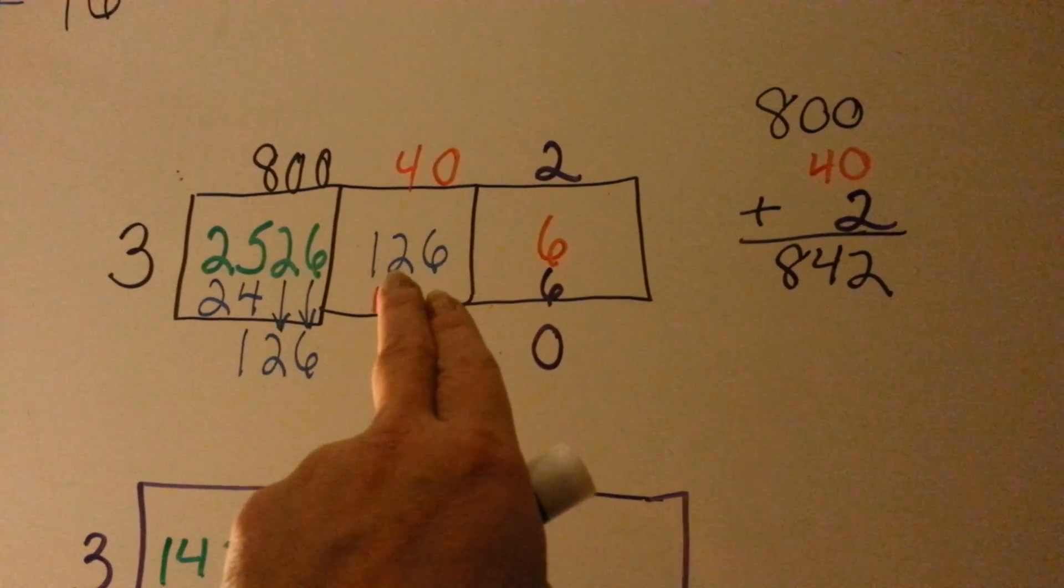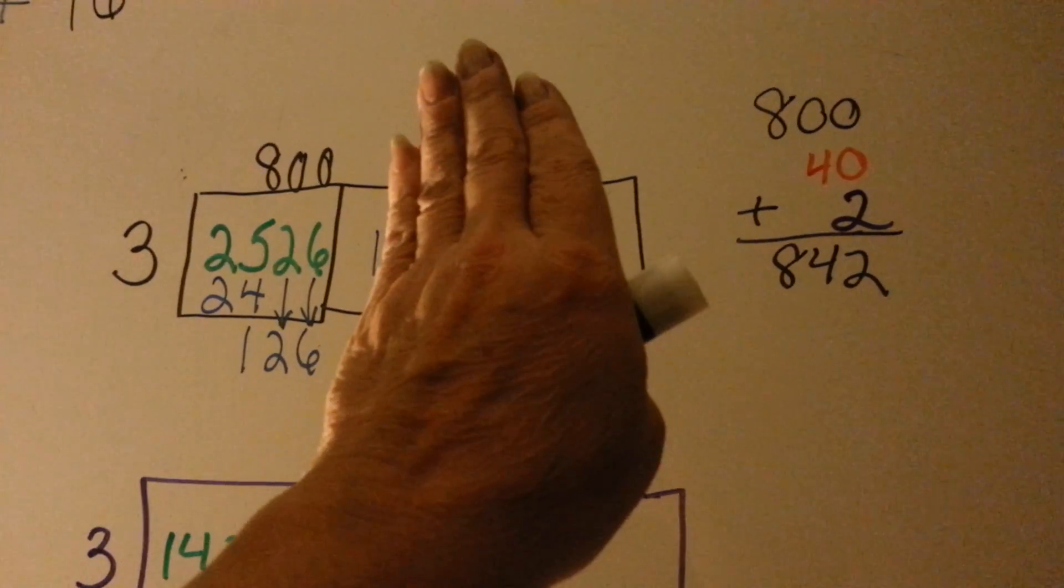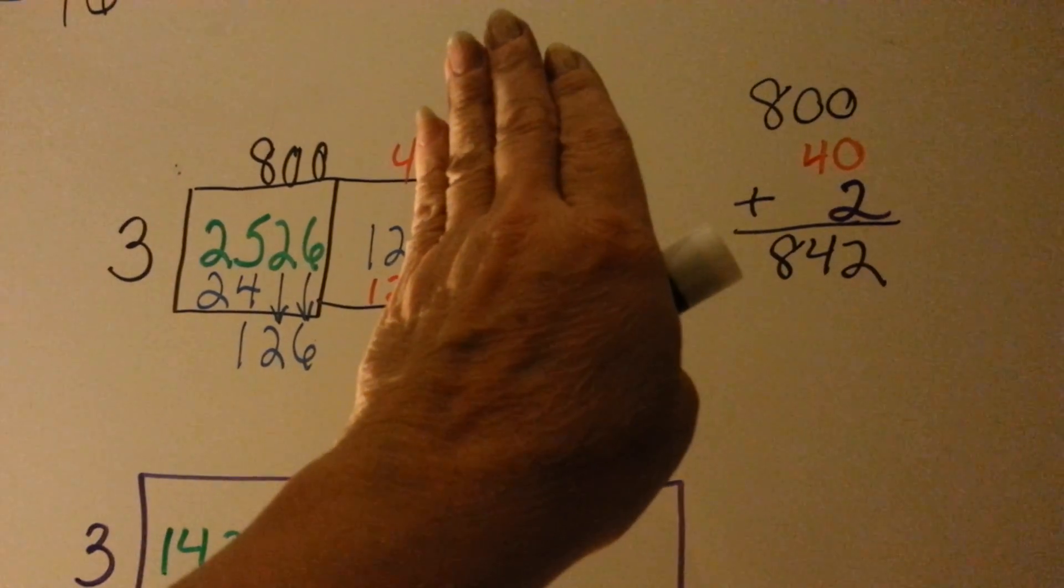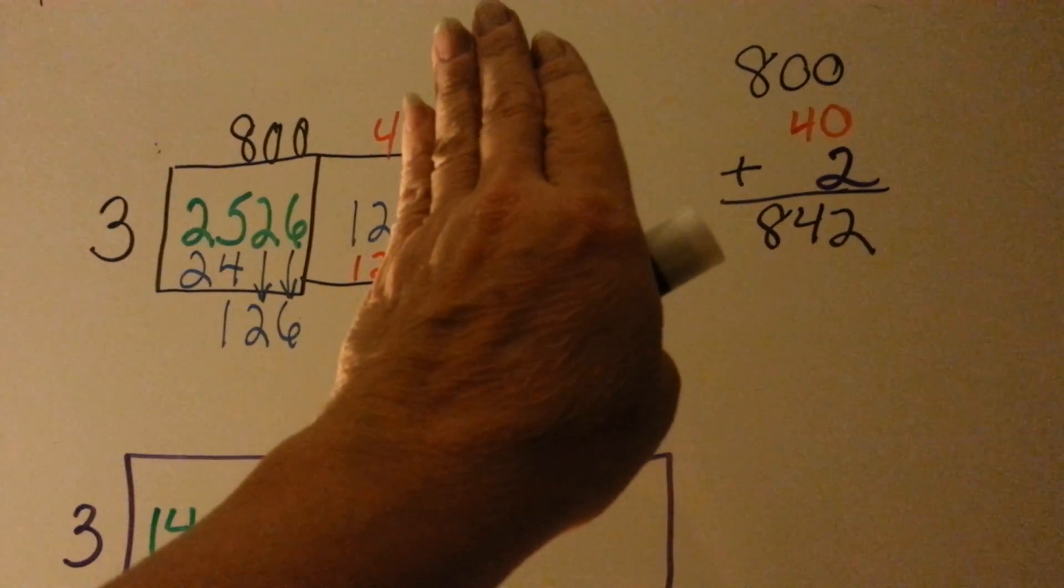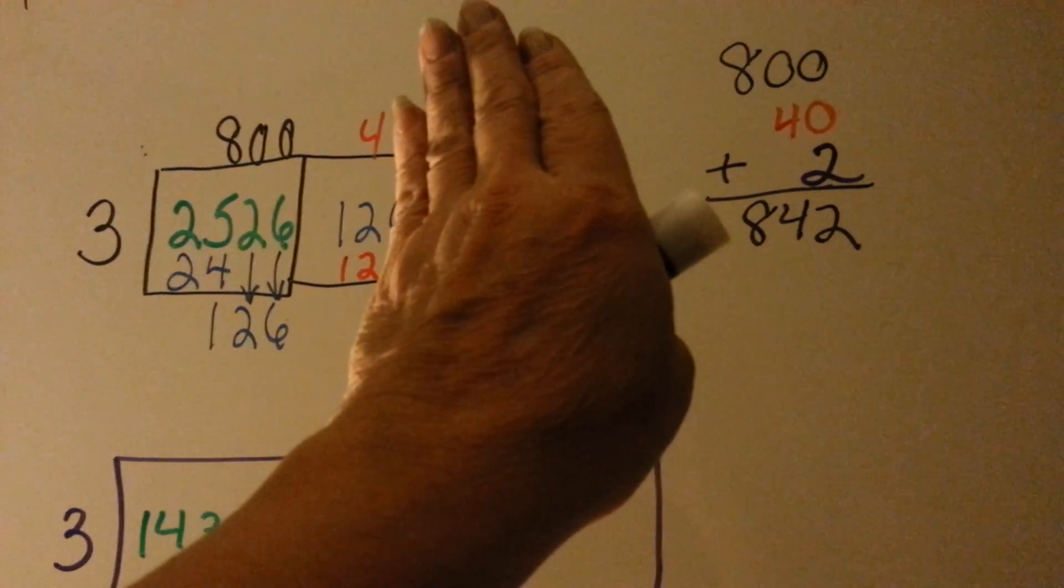You carry these over to the next box, and you ask yourself, can 3 go into 1? No. Can 3 go into 12? Yes, 4 times. So we put it up on top, above the 2, and we do 3 times 4, and it's 12.